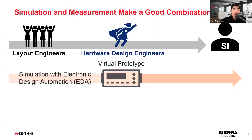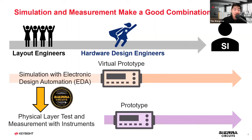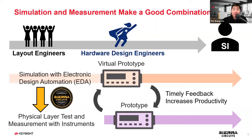You start out with the board design in Altium, Cadence, or Eagle, then go through the board design phase to get to your virtual prototype. Once you have that, you connect with Sierra Circuits to make the physical board. After the board is made, you do physical layer test and measurement with instruments. Keysight and Sierra Circuits make very good partners because we provide timely feedback and increase productivity when virtual prototype and prototype come together.